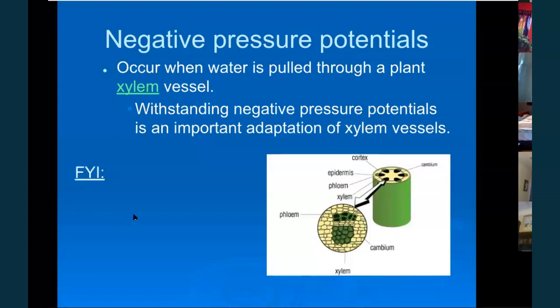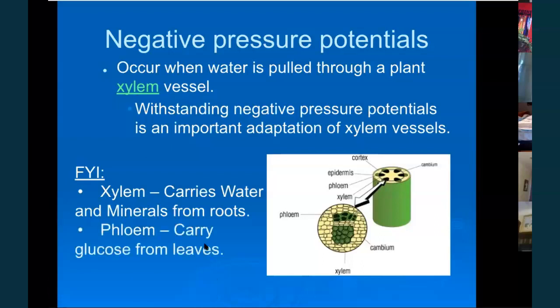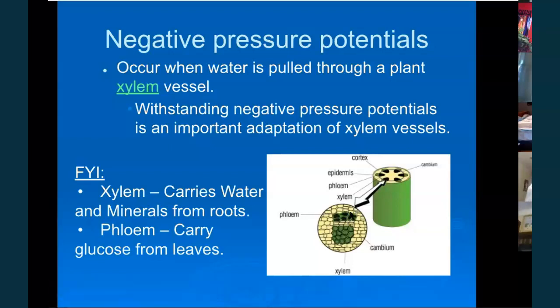Water moves up through a plant because it is increasingly negative until you get to the leaves. That's the scientific principle causing the water to move — not just 'because the plant needs water to live.' Xylem carries water and minerals from the roots; phloem carries the food — the glucose.